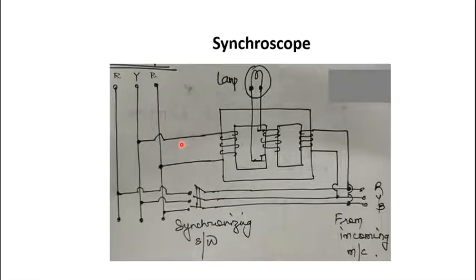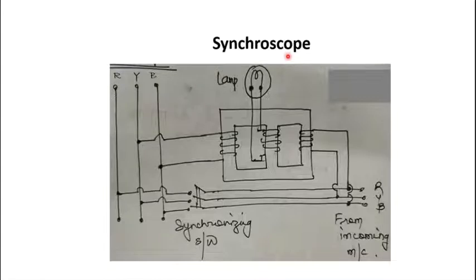The last instrument we will discuss is the synchroscope, in two types: conventional and electrodynamometer. Before going into the synchroscope, we need to understand why it is required. From the theory of transformers, whenever we want to connect two transformers in series, conditions must be matched — such as the X-to-R ratio and zero phase difference — otherwise circulating current will flow. The same applies when connecting two alternating sources in parallel, as we don't want current flowing between the sources, only through the load.